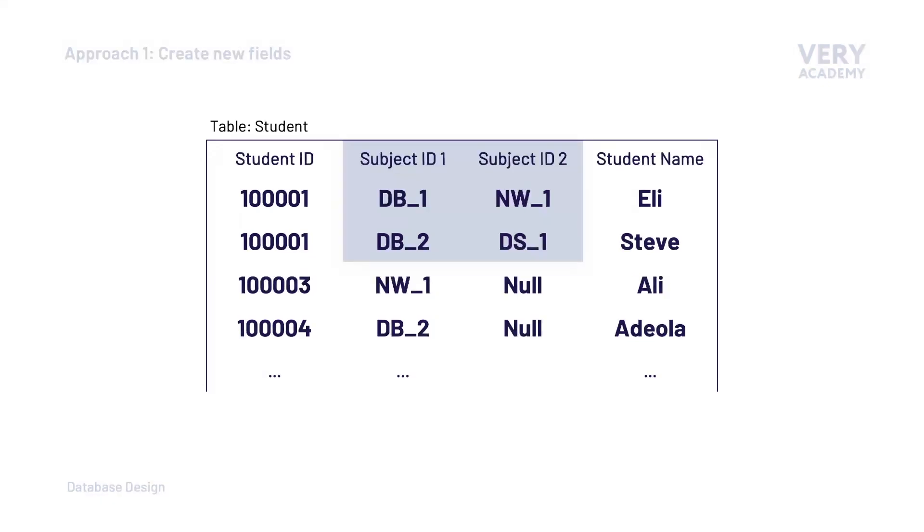So there are a few different approaches to use when resolving multi-valued fields. The first approach, we can create new fields. So for each subject that we might want to associate a student to, we could add a new field.